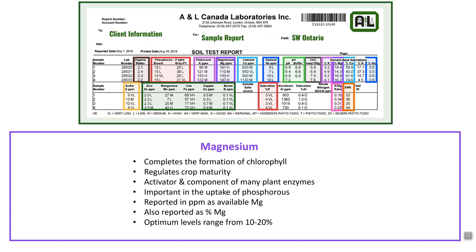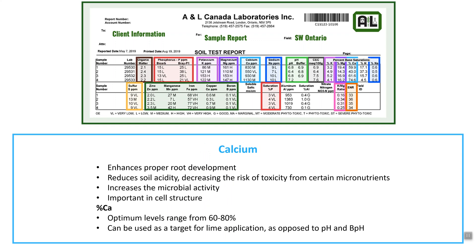Calcium is next on the soil report. It is important in the plant as well — it enhances root development, reduces soil acidity, and decreases the risk of toxicity from certain micronutrients within the soil profile. It is also important for microbial activity and cell structure. As a percent base saturation, optimum levels are between 60 and 80 percent, and we sometimes use that as a target for lime application as opposed to using the pH and buffer pH.